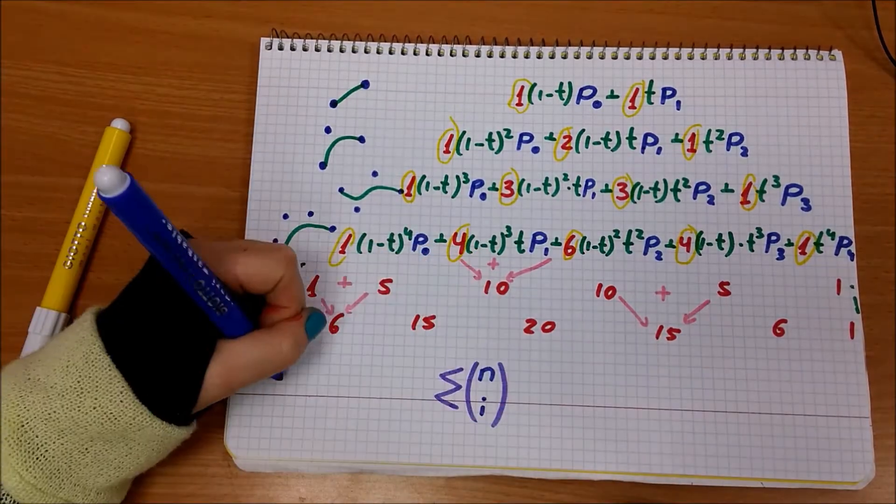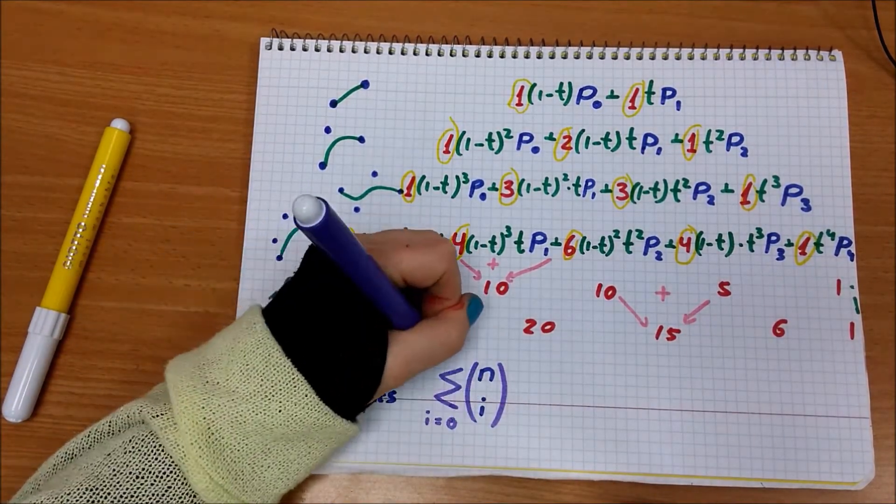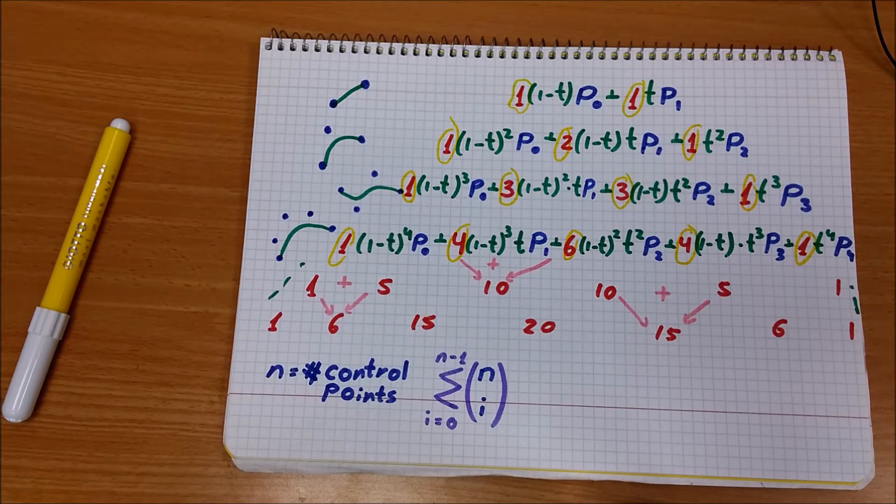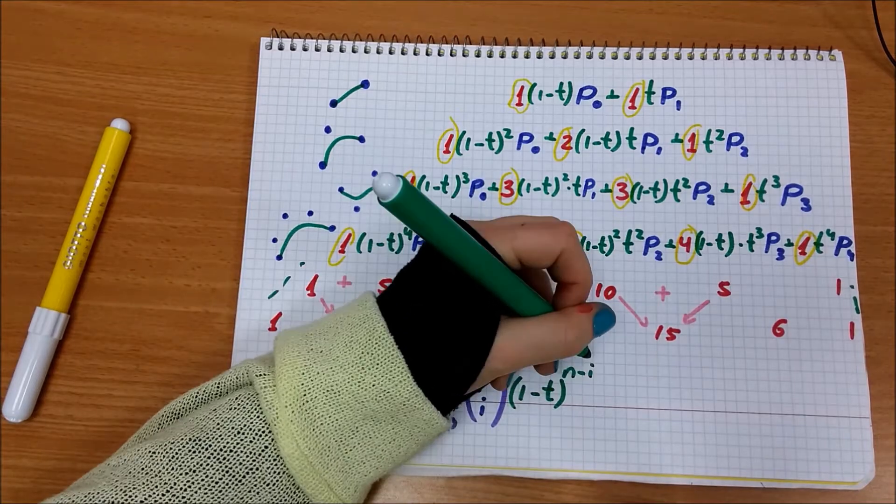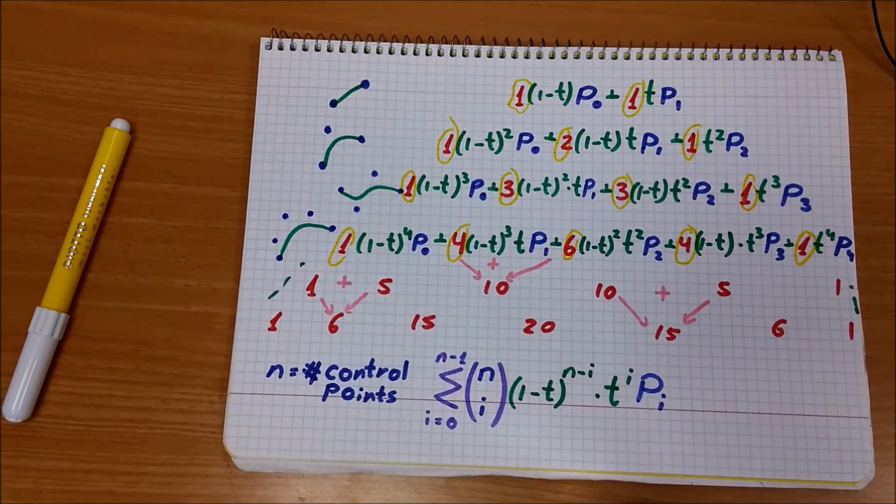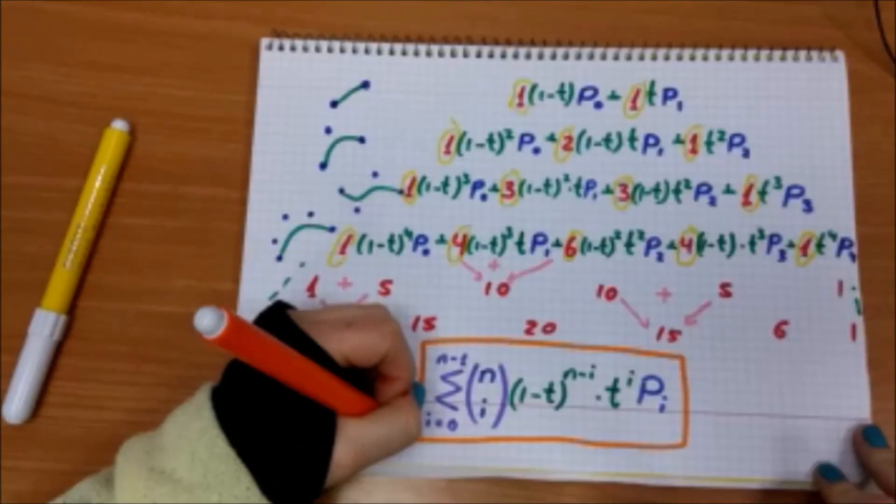We can derive from this pattern the formula for n control points. Thanks for watching!